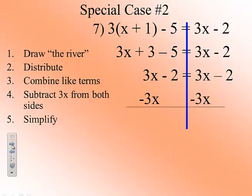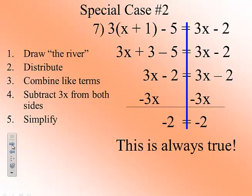When we subtract 3x from both sides, we end up with negative 2 equals negative 2. Or even notice that before we subtracted 3x from both sides, we had exactly the same thing on both sides of the equal sign. 3x minus 2 equals 3x minus 2. So in this instance, negative 2 always equals negative 2. Or 3x minus 2 always equals 3x minus 2. So this is always true.